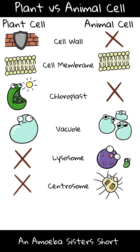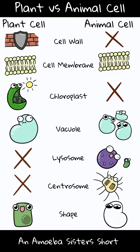Finally, you often see plant cell diagrams as rectangular and animal cell diagrams as circular, but don't get too stuck on that. Cell shapes for both plant and animal cells can vary, although the cell wall in plant cells tends to give them a more distinct shape compared to a more irregular shape in animal cells.